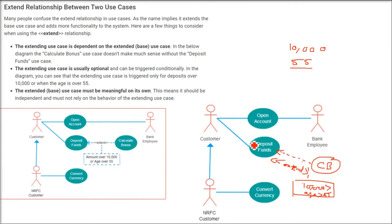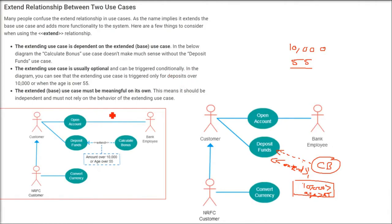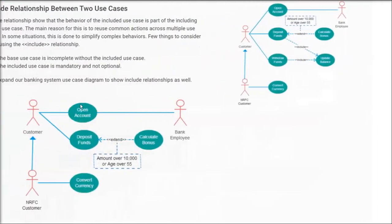For the programming perspective on extend: when we make a class and an object, the function of 'calculate bonus' will only be called when some trigger occurs. So this function is not always included — it will only be called when something specific happens.